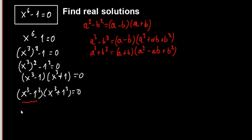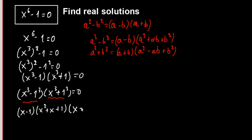The first factor gives us (x minus 1) times (x² plus x plus 1), and the other one gives us (x plus 1) times (x² minus x plus 1), all equal to 0.